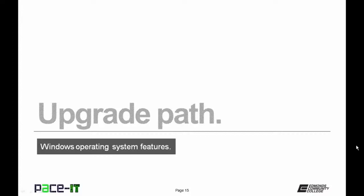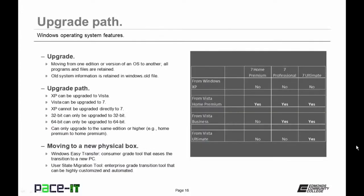Let's talk about the upgrade path. An upgrade is moving from one edition or version of an operating system to another, with all programs and files retained. XP can be upgraded to Vista, Vista can be upgraded to 7, but XP cannot be upgraded directly to Windows 7.